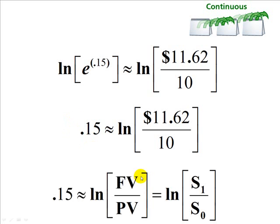And so here, just to put that back into symbolic terms, that 15% was our continuously compounded rate. It's approximately equal to, because I did some rounding, the natural log of the future value divided by the present value. And if we're using stocks, for instance, we might say it's the natural log of the stock price.